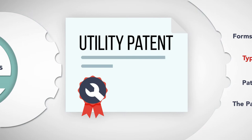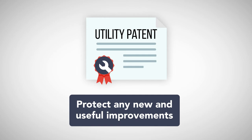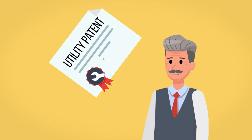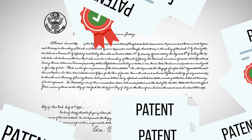Utility patents are the most common type of patents. They protect new and useful processes, machines, articles of manufacture, or compositions of matter, and also protect any new and useful improvement of any of these categories. For example, Thomas Edison received a utility patent for an incandescent light bulb in 1880. Since that time, thousands of other patents have been issued covering improvements to the light bulb.